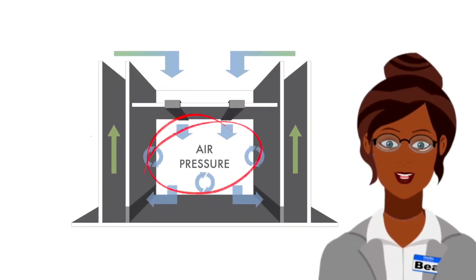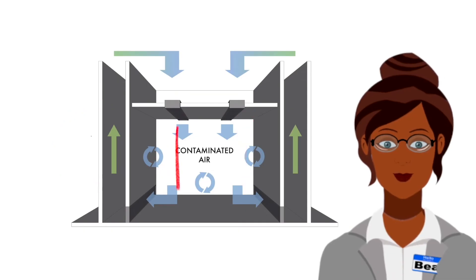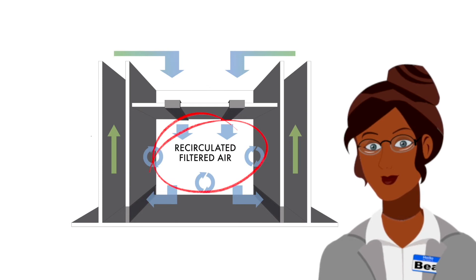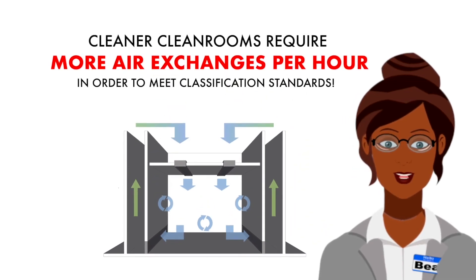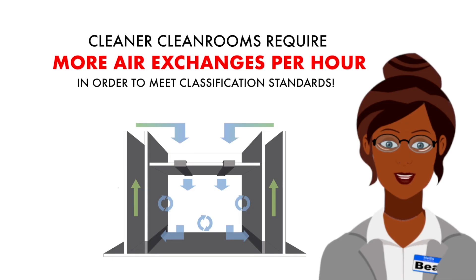When the air pressure in the room is greater than the pressure outside, the contaminated air is pushed out of the room through vents, filtered, and recirculated. Cleaner clean rooms require more air exchanges per hour in order to meet classification standards.